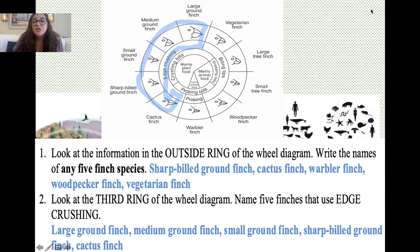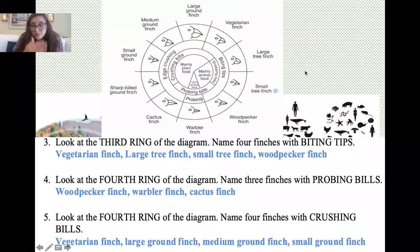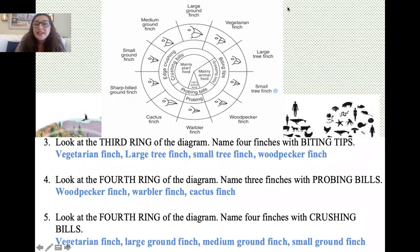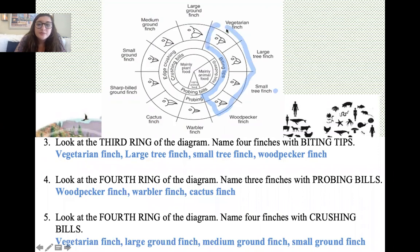Still looking at the third ring, name four finches with biting tips. Looking for biting tips, which extends pretty far around the diagram, we have the vegetarian finch, the large tree finch, the small tree finch, and the woodpecker finch — these are all the finch species that have biting tips, as we can interpret from the drawing.